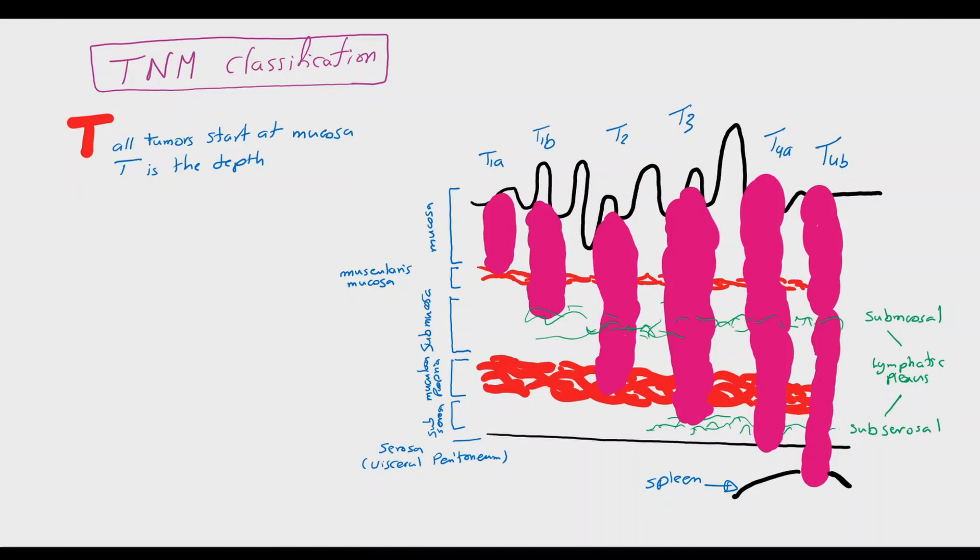Here we can see the tumor with the T1A stage. This is an early gastric tumor. It's unlikely to have lymphatic spread because it didn't reach any layer rich with lymphatic vessels like the submucosa or subserosa. All other tumors penetrate these layers and are more likely to have lymphatic spread.